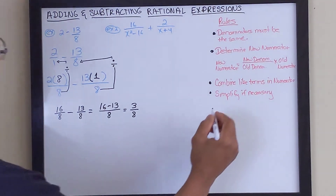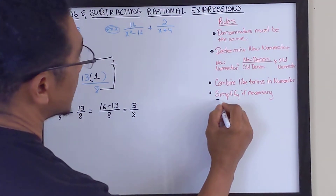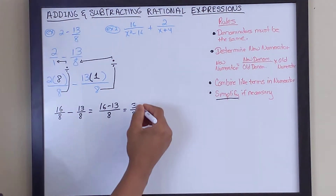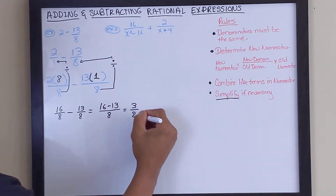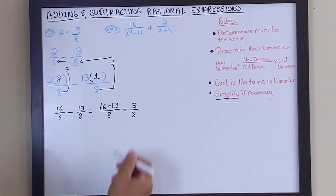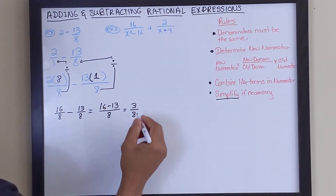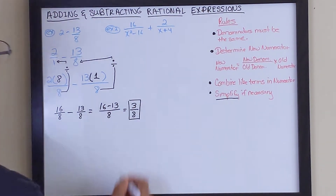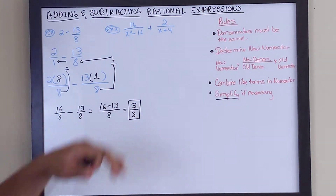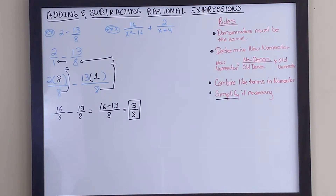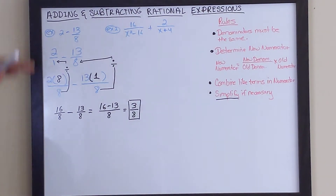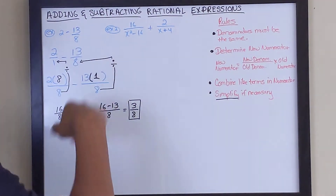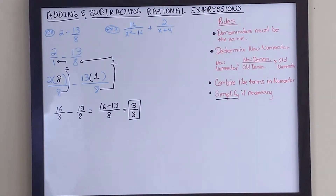The last step is to see if we can simplify. In this case, you can't reduce 3 over 8 any further, so this is our answer for this particular problem. If you have any questions, rewind back and review what we did to get to this point.